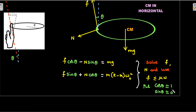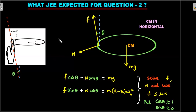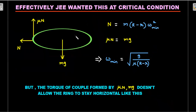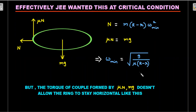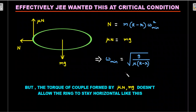With theta equal to zero, cos theta equals one and sin theta equals zero. At the critical condition, mu*N acts upward, N acts horizontally, and mg acts downward. Balancing: mg equals mu*N, and N alone provides the centripetal acceleration. Solving these two equations gives omega-minimum equals the square root of g divided by mu times (R minus r), which is option A. But there's a catch.